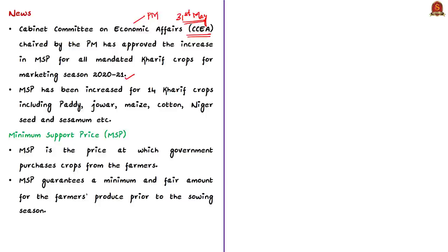The minimum support price has been increased for 14 crops which include paddy, jowar, maize, cotton, niger seed, sesamum, etc. Many times you have seen the term MSP or minimum support price in newspapers. So what is this MSP? The prices of agri commodities are quite unstable.